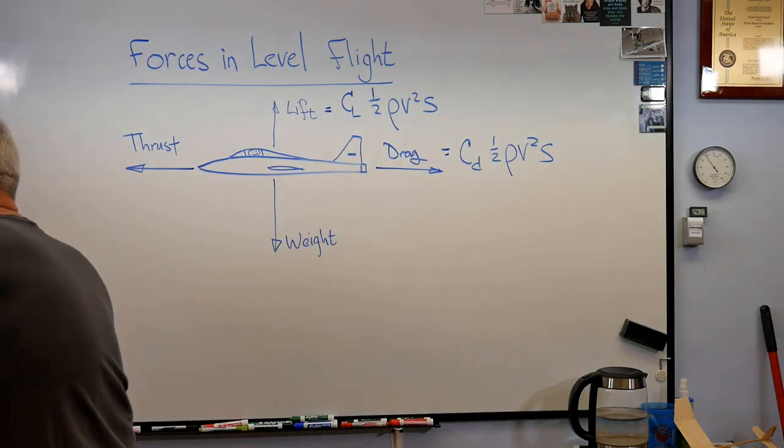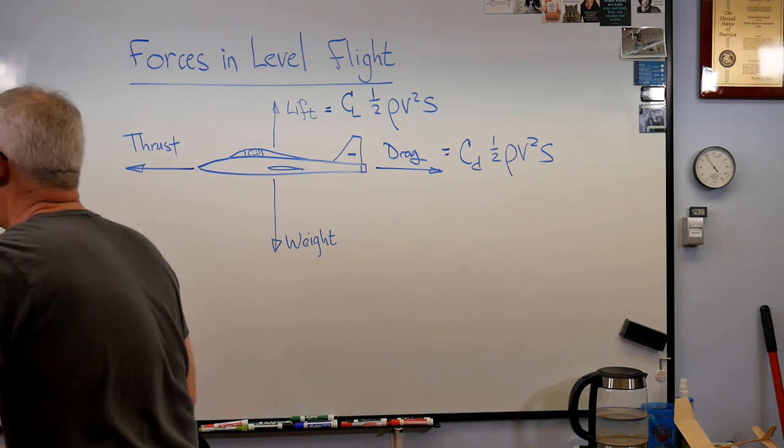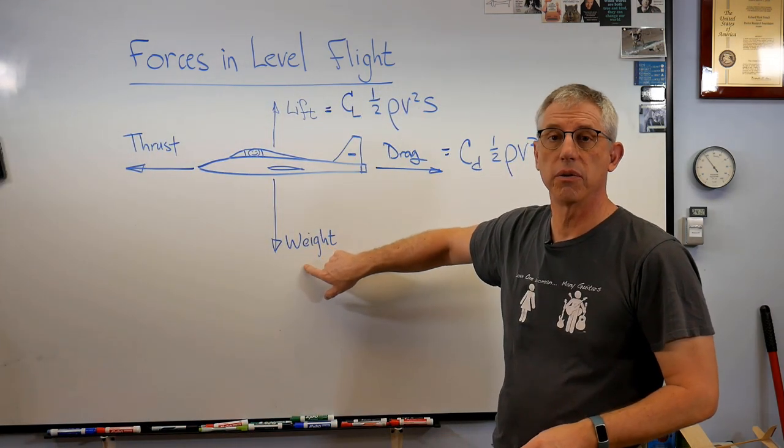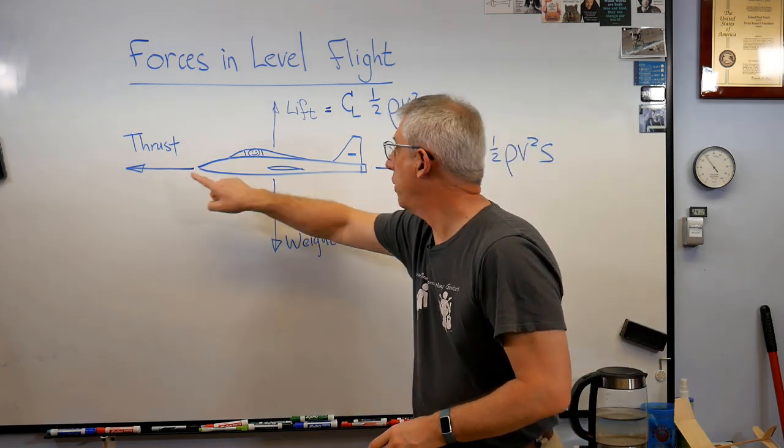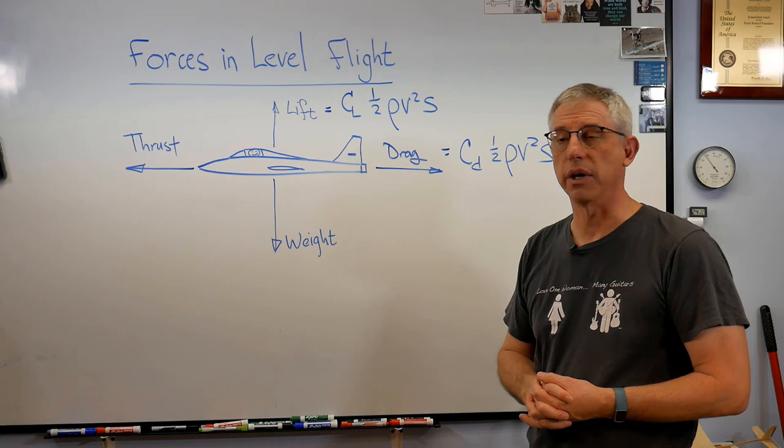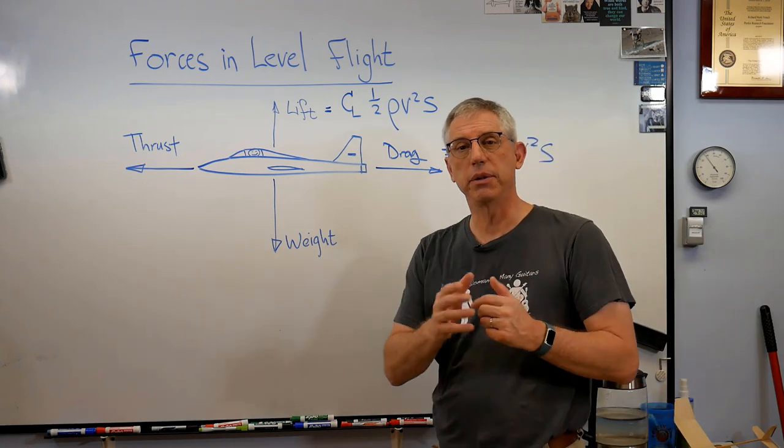Fortunately, it's a durable plane. Lift has to equal weight. So sum of the forces in the vertical direction is zero. Thrust equals drag. Sum of the forces in the horizontal direction equals zero. All right. I hope that helps. And we'll talk to you next time.